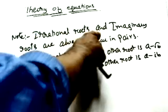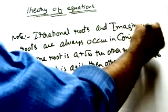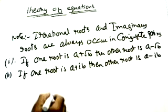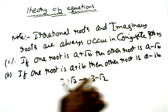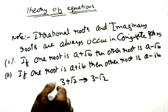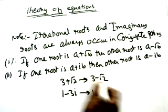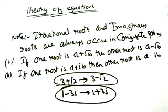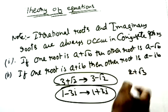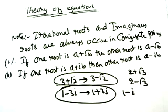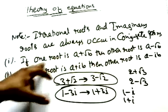Irrational roots and imaginary roots always occur in conjugate pairs. For example, if one root is 3 + √3, then the equation must also have the root 3 - √3. These two are conjugates: A + √B is the conjugate of A - √B. Similarly for imaginary roots: if one root is 1 - 3i, the other root will be 1 + 3i. So if one root is 2 + √3, the other is 2 - √3; if one root is 1 - i, the other is 1 + i.